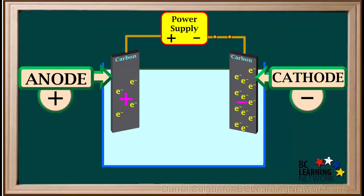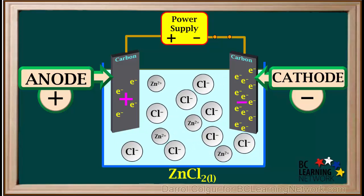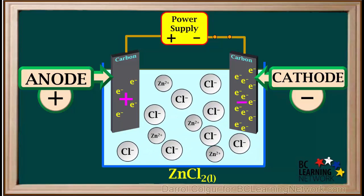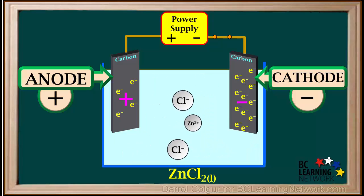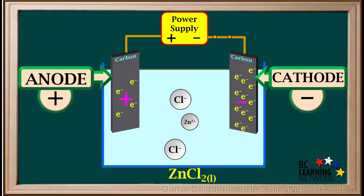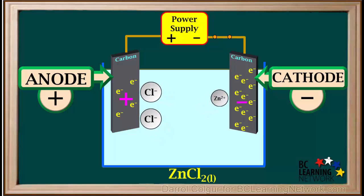We'll redistribute the electrons and stop showing the protons for simplicity. We'll add some molten zinc chloride to the container. A molten salt like zinc chloride consists of ions that are in constant random motion. Now we'll focus on one zinc ion and two chloride ions. The positive zinc ions will be attracted to the negative cathode, while the negative chloride ions will be attracted to the positive anode.